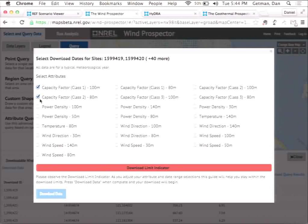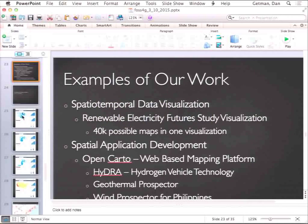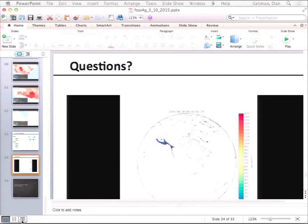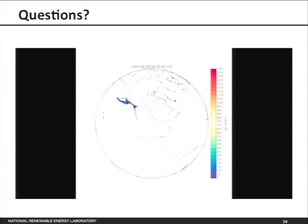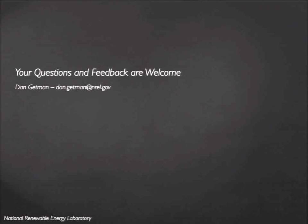We're doing this not just for the Philippines' five-terabyte wind dataset, but also for a North American continent solar resource dataset that's currently 20 terabytes and will probably be 40 terabytes by the time we're done. The government paid for it and the idea is to distribute it, so we're scaling this distribution approach up from five to 20 to 60 terabyte datasets.